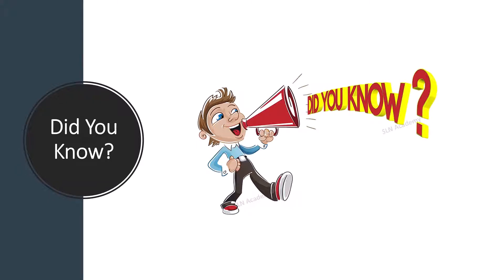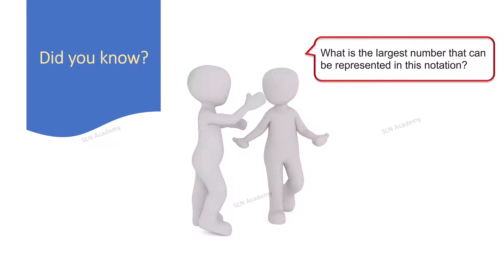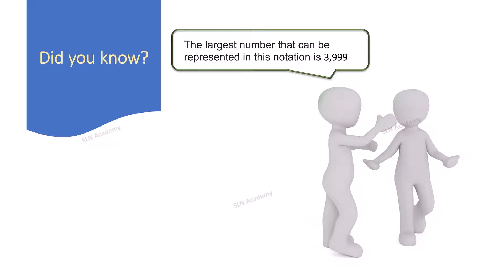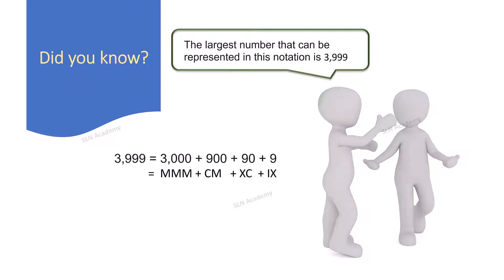Did you know what is the largest number that can be represented in standard Roman numeral notation? The largest number is 3999. Here is how: 3999 is regrouped as 3000 + 900 + 90 + 9. So 3000 = MMM, 900 = CM, 90 = XC, 9 = IX. Therefore, 3999 = MMMCMXCIX.